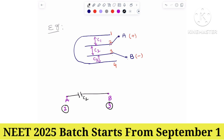Between plates 2 and 1 — I am marking plate 1 here — because plate 1 is not joined to B directly. Between plates 2 and 1, one capacitor is there. Let it be C1.